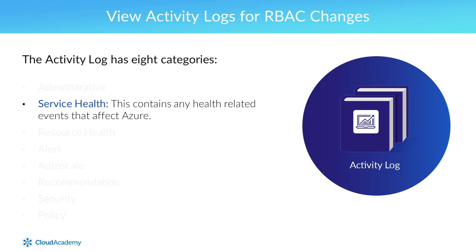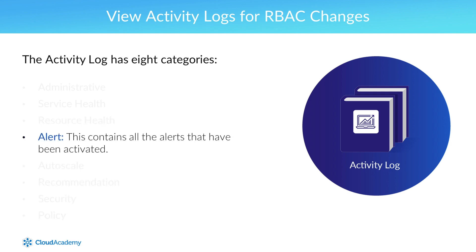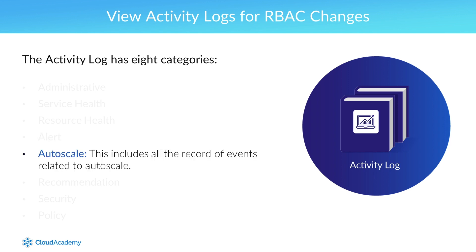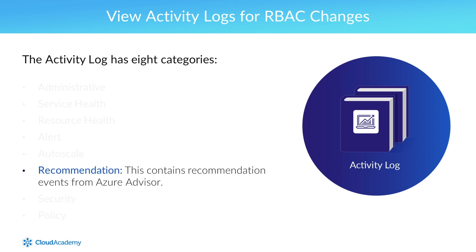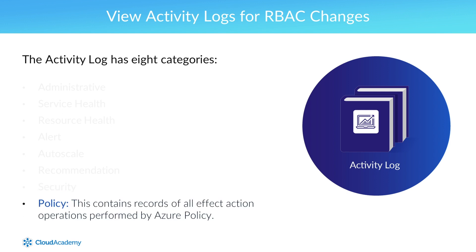Service Health will contain any health-related events that affect Azure. Resource Health will contain the records of any resource health events that have occurred to your deployed resources in Azure. Alerts will contain all the alerts that were activated. Autoscale will include the records related to autoscaling. Recommendations will have the recommendations from Azure Advisor. Security will contain all of the logs generated by Azure Security Center. And finally, Policy will contain records of all effect actions performed by Azure Policy.